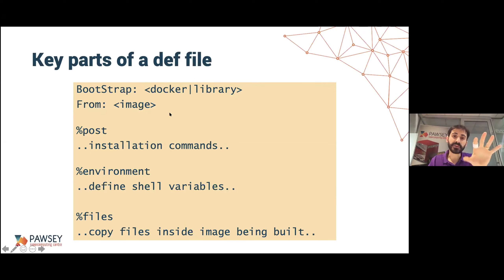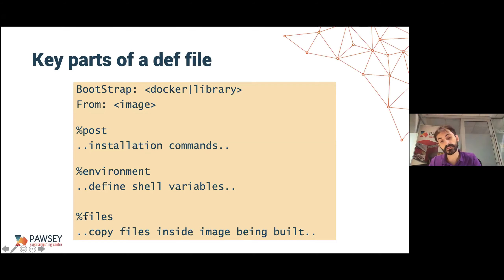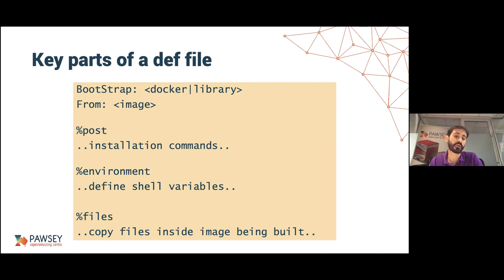The key parts of the definition file are: the base image with 'bootstrap' and 'from', Linux commands with '%post', shell variables with '%environment', and a fourth important section you might often need — '%files'. In the files section you put a list of files to copy from the host machine into the container image being built. Examples include configuration files you need to customize prior to building, where it's easier to have a copy on the host and just copy it in, rather than downloading from the internet in the post section.